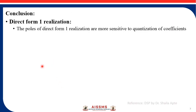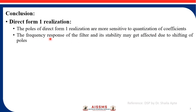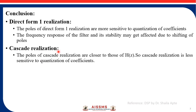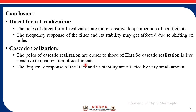Let us conclude. For direct form 1 realization, the poles are more sensitive to quantization. The frequency response of the filter and its stability may get affected due to shifting of poles. For cascade realization, the poles are closer to those of the original transfer function, so cascade realization is less sensitive to quantization of coefficients. The frequency response and stability are affected by a very small amount.